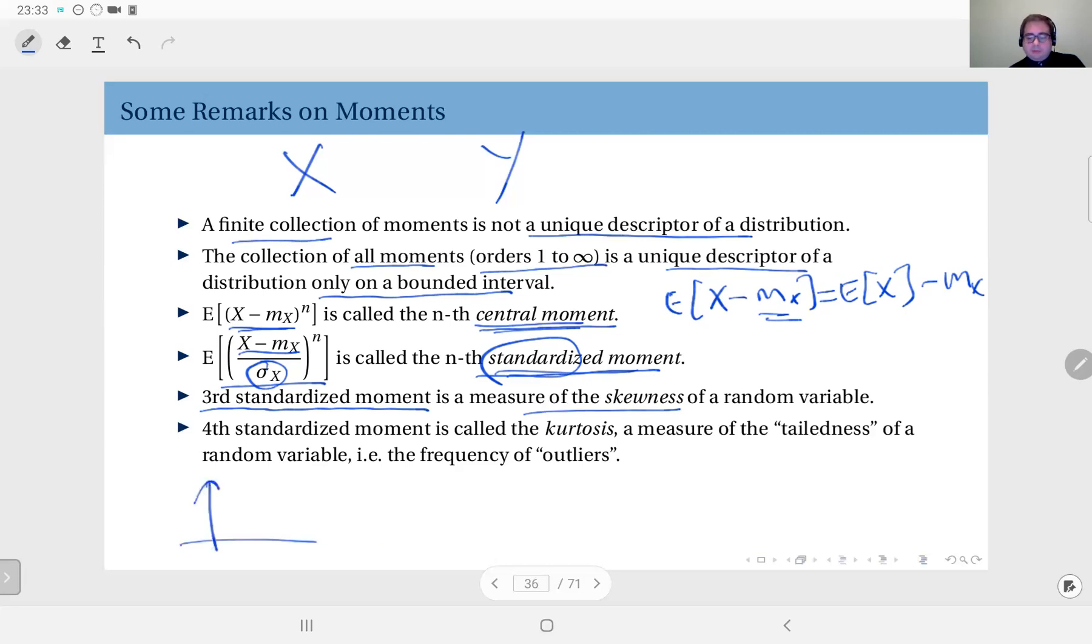Something like this. So if you have a distribution, I'm talking about PDFs. So let's say this is the mean. You see, we have more outcomes to the left of the distribution and we have less possible outcomes to the right of the distribution. So this, we say, has negative skew.